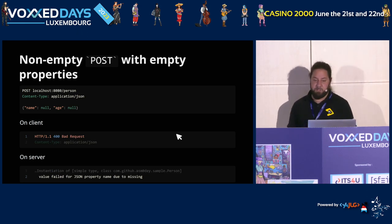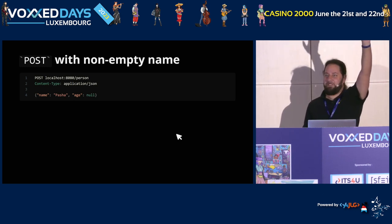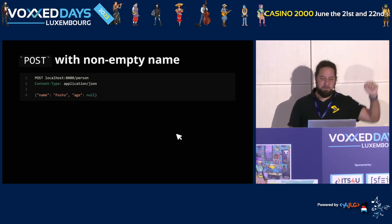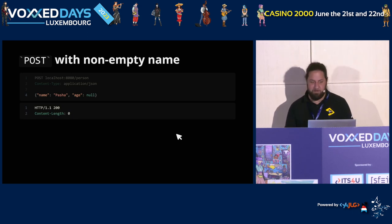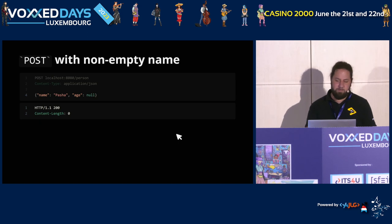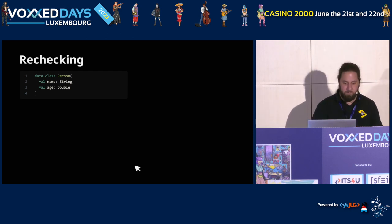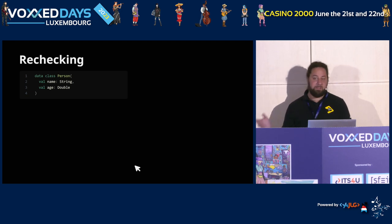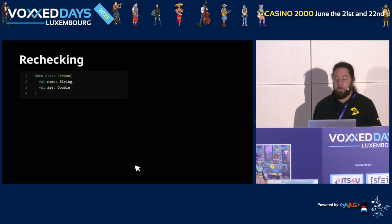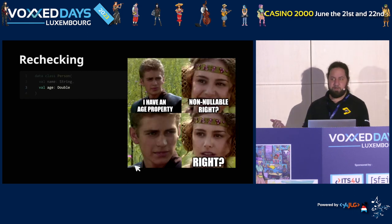Now let's try posting empty properties — name Pasha but age set to null. Who thinks it will cause an error? It actually passes. Let's look at our data class again. Name is String and age is Double — both declared as not-nullable. The reason it passes is that in the JVM, there are primitive types like int, char, double, float, and boolean, and they have default values in the JVM.